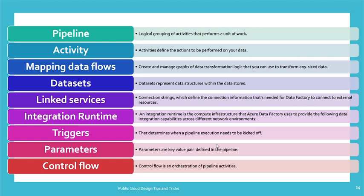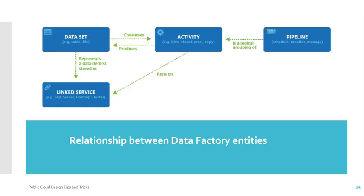Triggers determine when a pipeline execution needs to be kicked off — when a pipeline will be started, a trigger can be used. Parameters are key-value pairs defined in the pipeline. The control flow is an orchestration of the pipeline — you can orchestrate multiple pipelines via the control flow. These are the basic components used by Azure Data Factory.